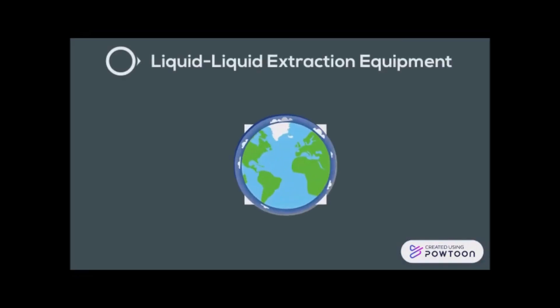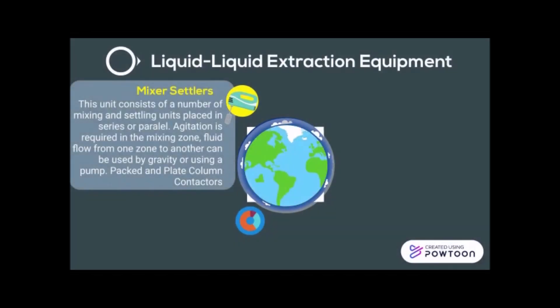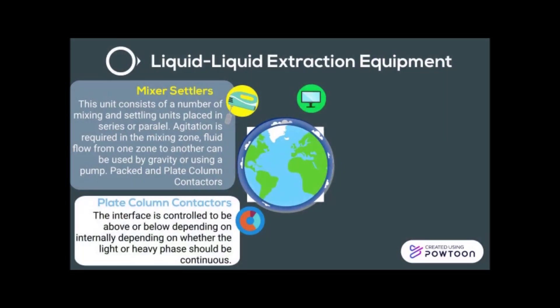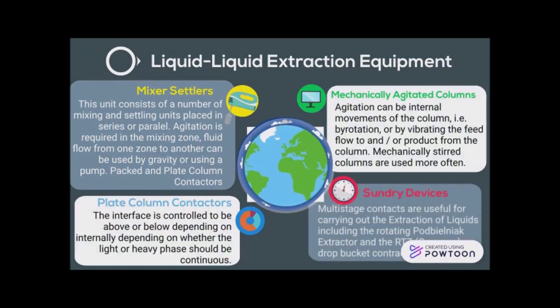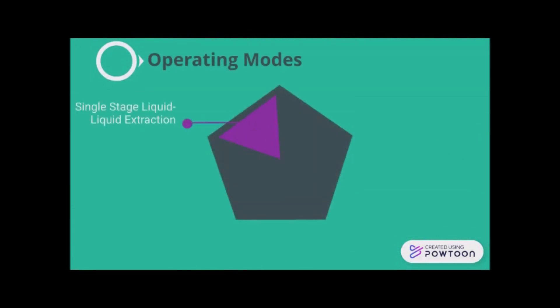The equipment used for liquid-liquid extraction includes the following. Mixer-settlers are a series of mixing and settling units used when a small number of stages are applied; agitation is required at the mixing zone. Next are pulsed and packed column contactors, where the interface is controlled to be above or below depending on whether the light or heavy phase should be continuous. Mechanically agitated columns use internal movement or vibration of feed flow. Centrifugal devices such as rotating extractors and falling-film contactors are also used.